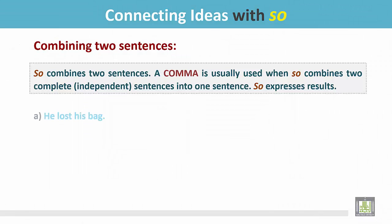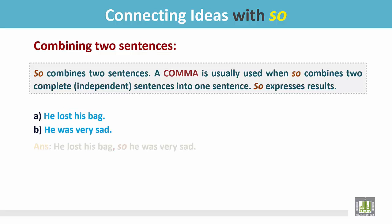Let's see the example: 'He lost his bag. He was very sad.' In these two sentences, one is the reason and the other is the result. Joining them with 'so': 'He lost his bag, so he was very sad.' This is the cause, and this is the result, joined by 'so'.